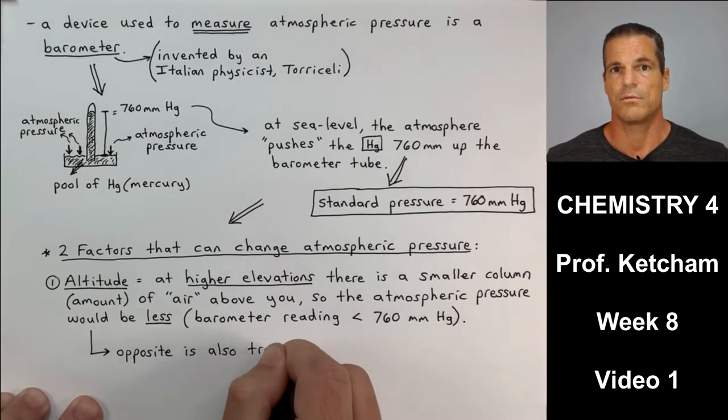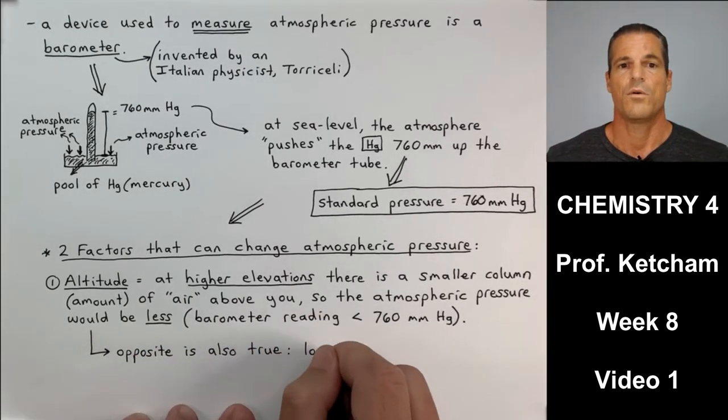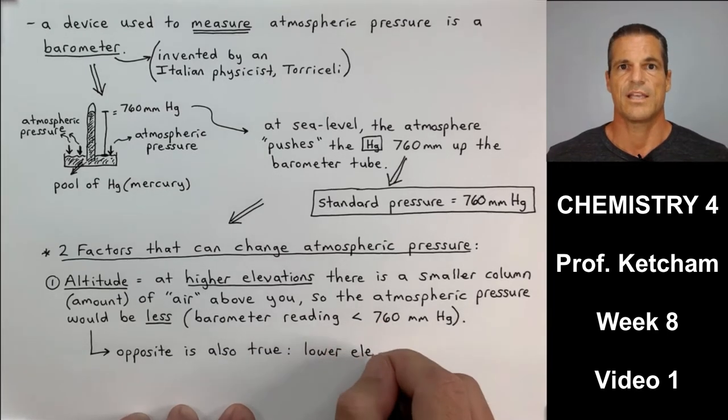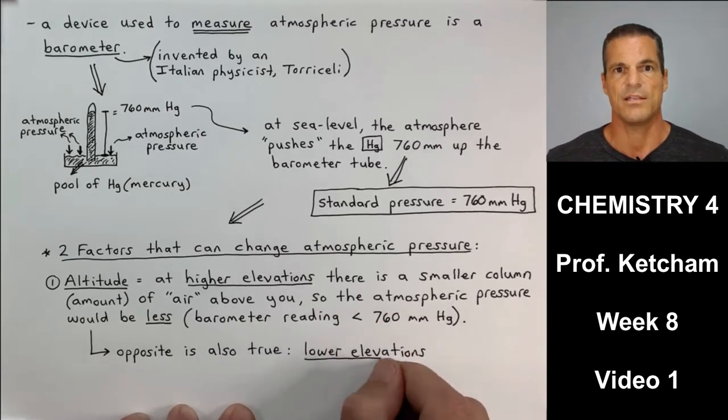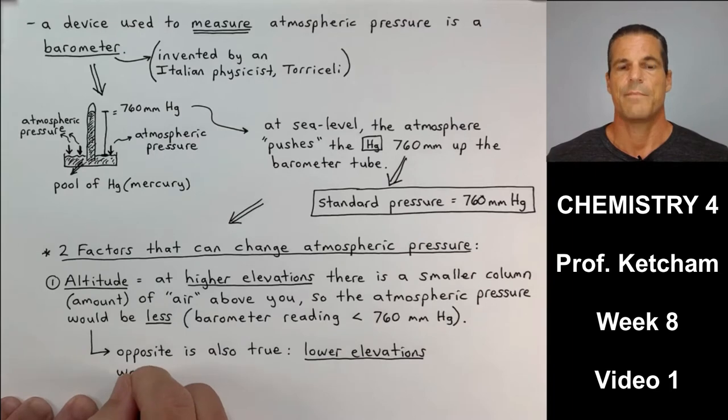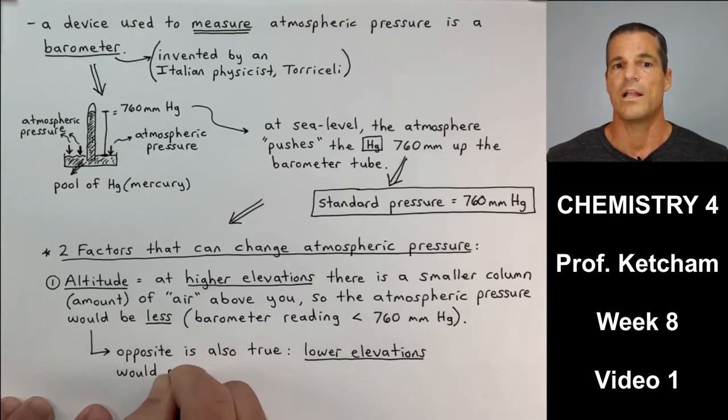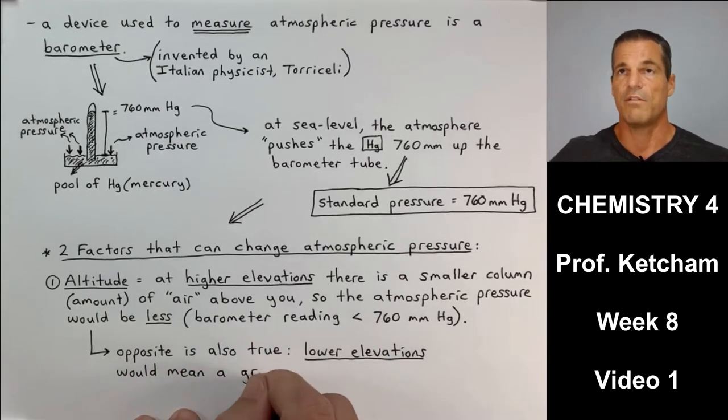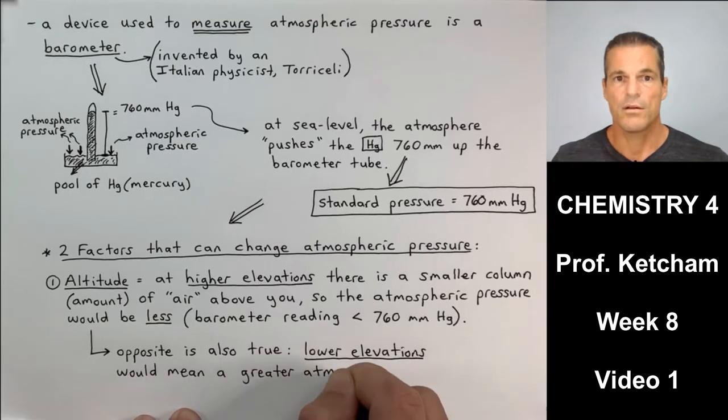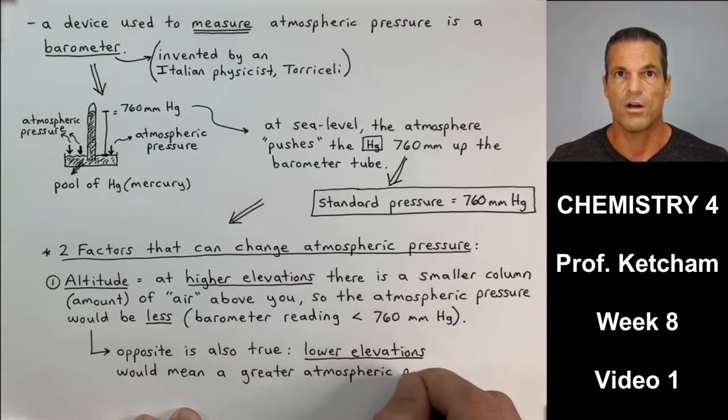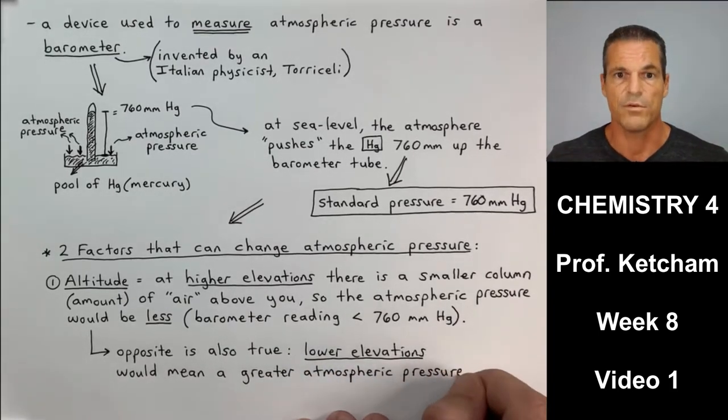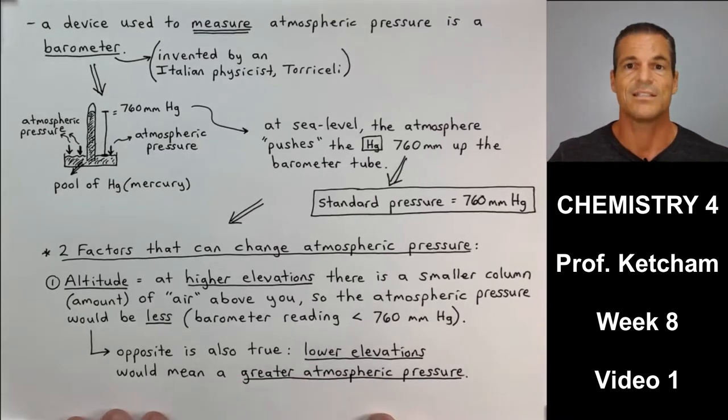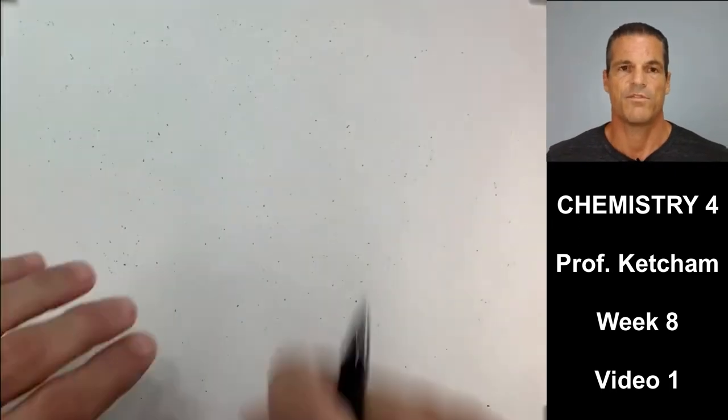Now, the opposite is also true. So, if you are in lower elevations, like in a valley or in the Grand Canyon here in the U.S., the opposite is also true. So, these lower elevations would mean you have a lot more air or a larger column of air above you. That's heavier. Because it's heavier, the atmospheric pressure is greater.